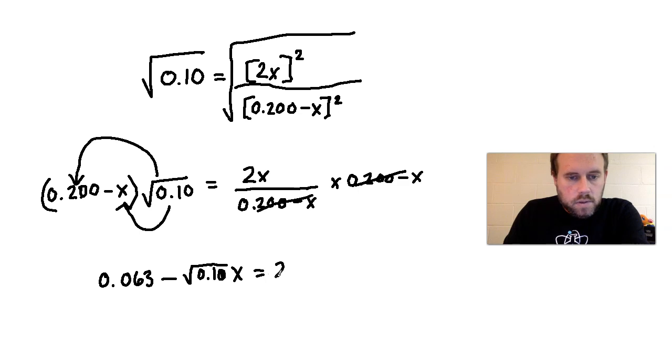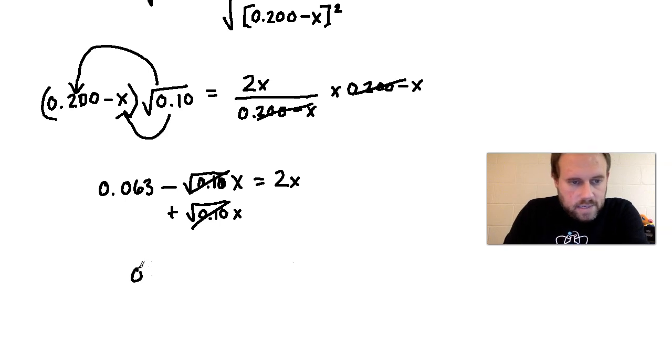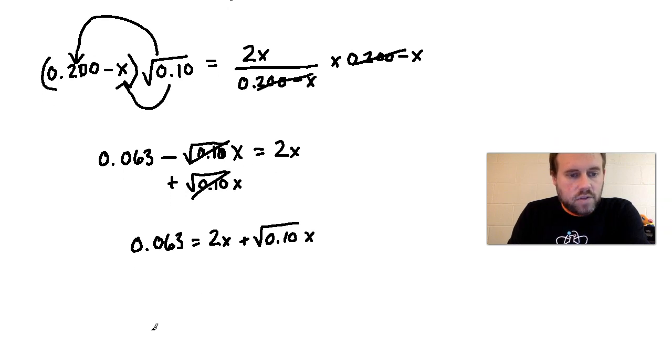So what I will do next is I will multiply the square root of 0.1 times 0.2. And then I will also multiply the square root of 0.1 times negative X. And what I would get in return here is the 0.2 times the square root of 0.1. And if you run that through your calculator, you should get a value of 0.063. And then when I multiply it by negative X, it's simply going to be minus the square root of 0.1X. So that is equal to 2X. So now the next thing is, let's get X on the same side. So in order to get X on the same side, since this is a negative, I'm going to add the square root of 0.10X. And that'll cancel on this side. But then I'll bring it over to the other side. I have to add it to the other side. And so what I will get is an expression that says 0.063 equals 2X plus the square root of 0.10X.